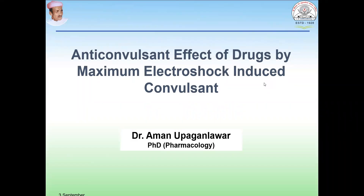Hello students. Today we are going to discuss the preclinical methods which are used for the screening of anticonvulsant drugs. There are two types of methods. First is chemical-induced convulsion where pentenyl tetrazole is used. Another is the electroshock-induced convulsion where electrical impulses are transmitted into the brain of the animal and convulsion is observed. Let's see how it is performed.